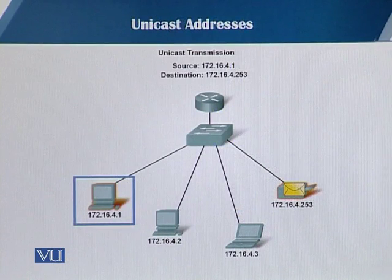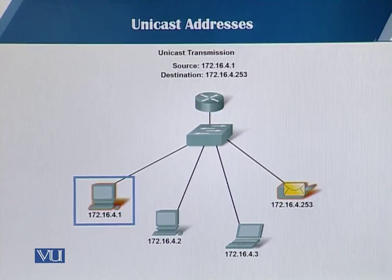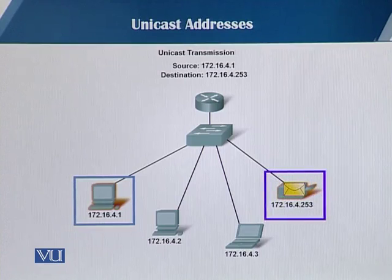Now let's look at an example of a unicast address. This is a typical unicast transmission where you have a source address of 172.16.4.1. You can see a box over the machine showing the source address, and then the destination is 172.16.4.253. So this is a typical unicast address — one sender is sending data to one receiver.